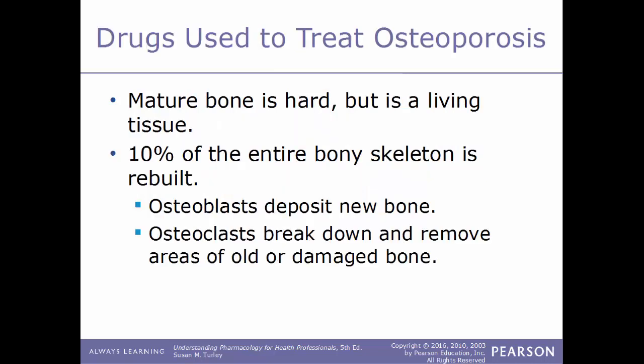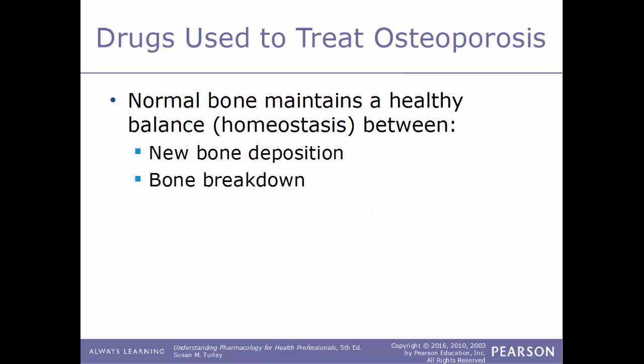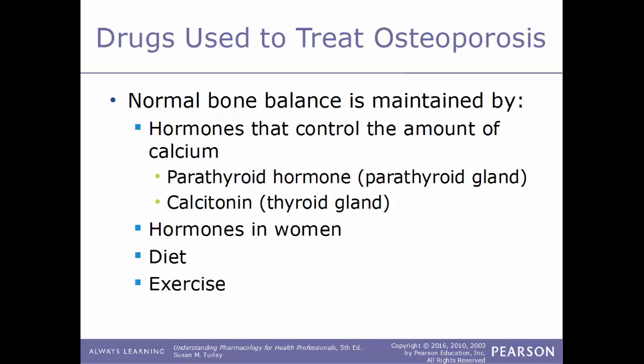Moving into drugs used to treat osteoporosis: mature bone is a hard but dynamic living tissue — approximately 10% of the skeleton is rebuilt each year. Two main types of cells are found within the skeleton: osteoblasts, which build new bone, and osteoclasts, which break down and remove old and damaged bone. Normal bone maintains a healthy balance — homeostasis — between the amount of bone deposited and the amount broken down, in a continual daily process.